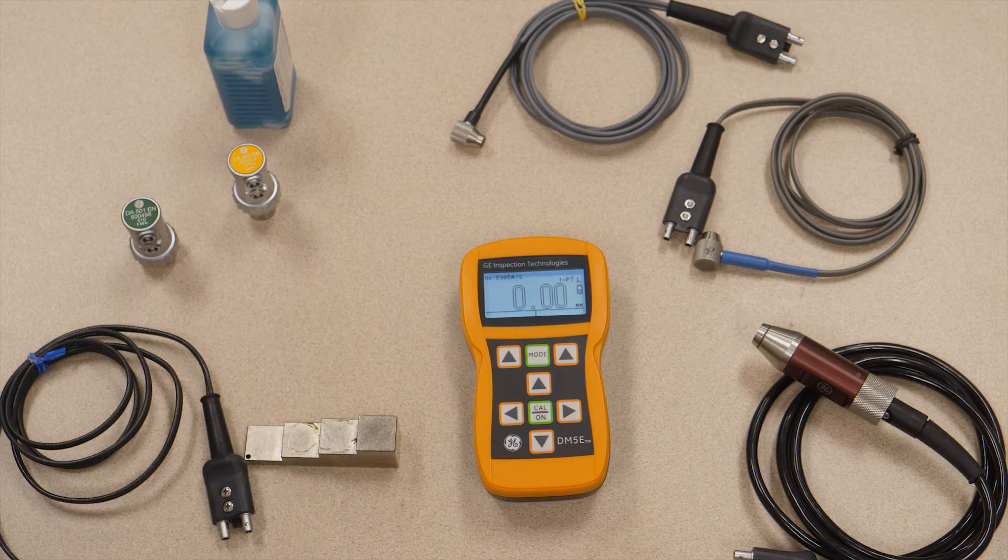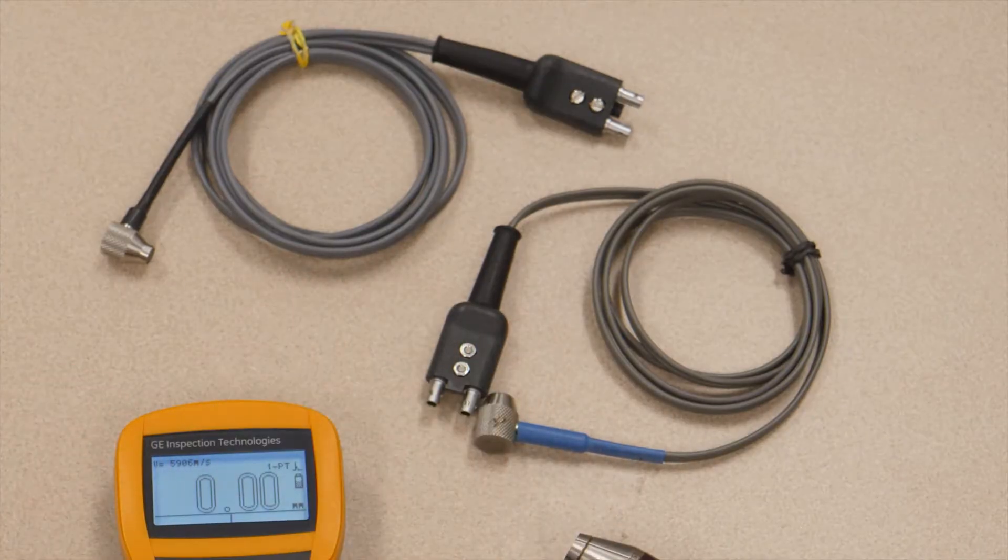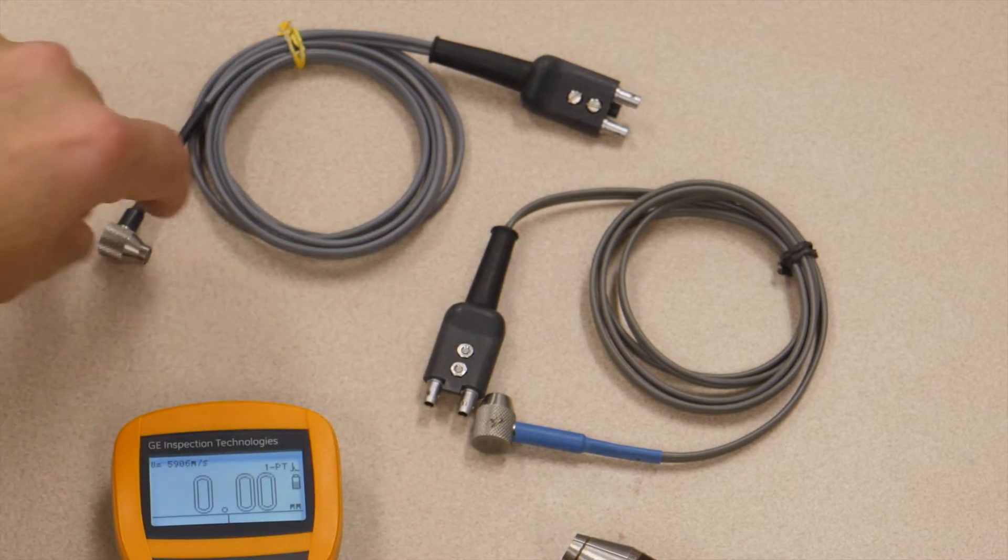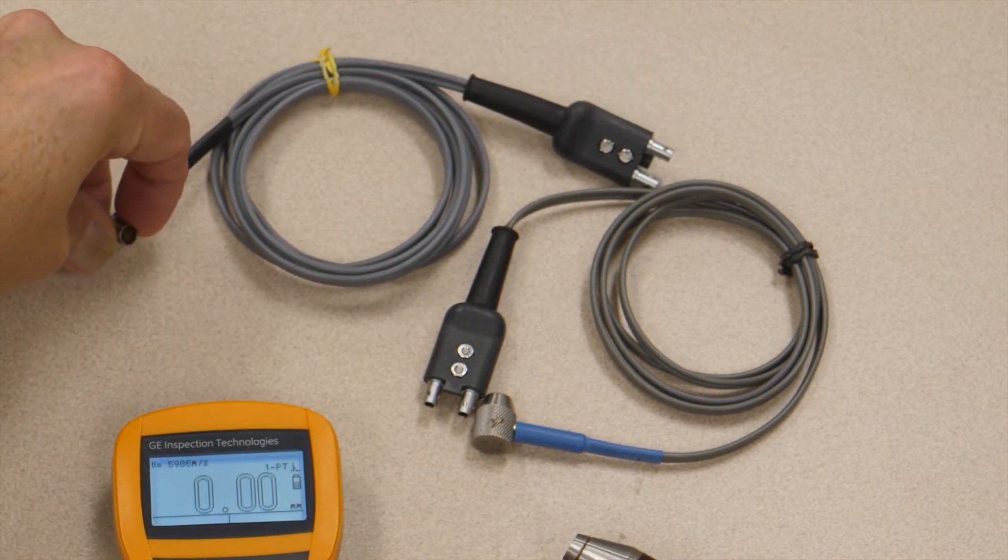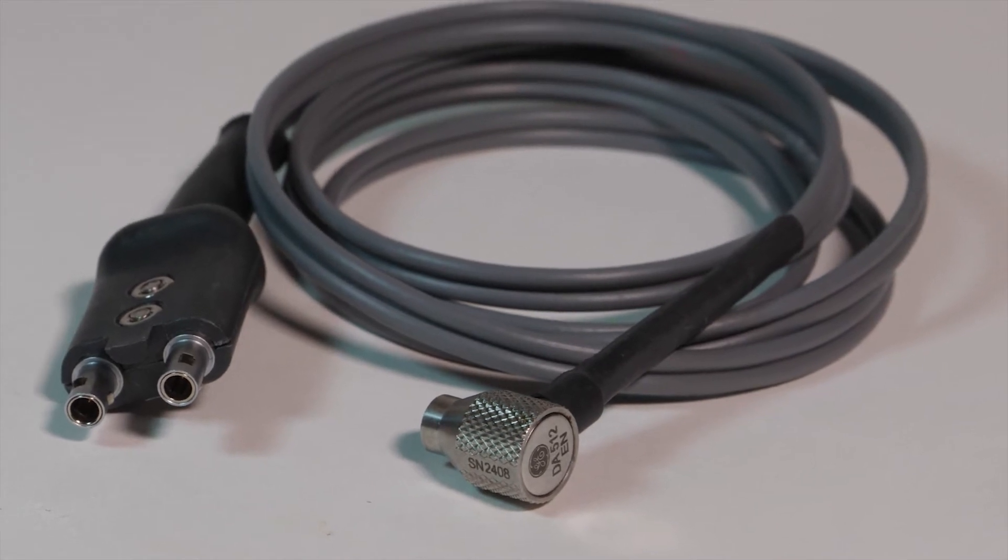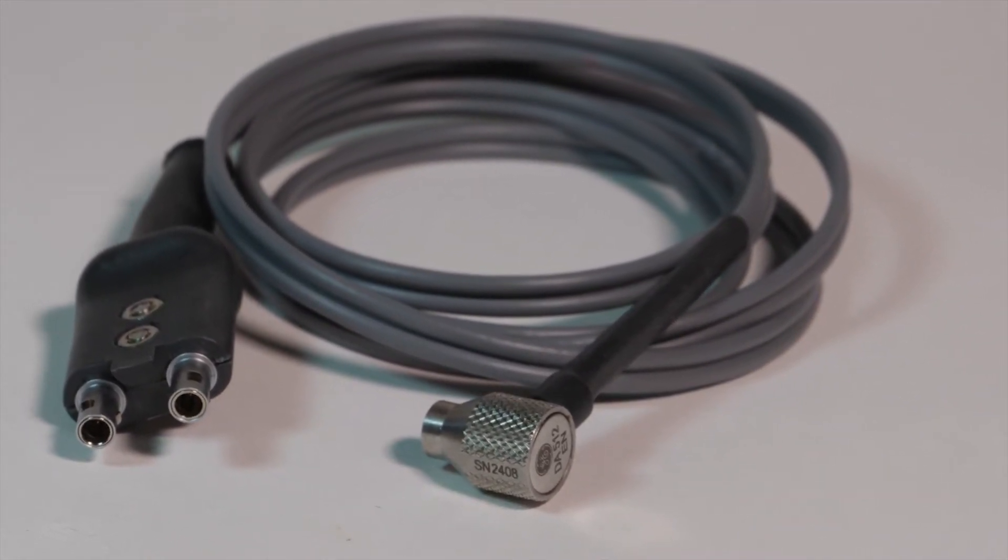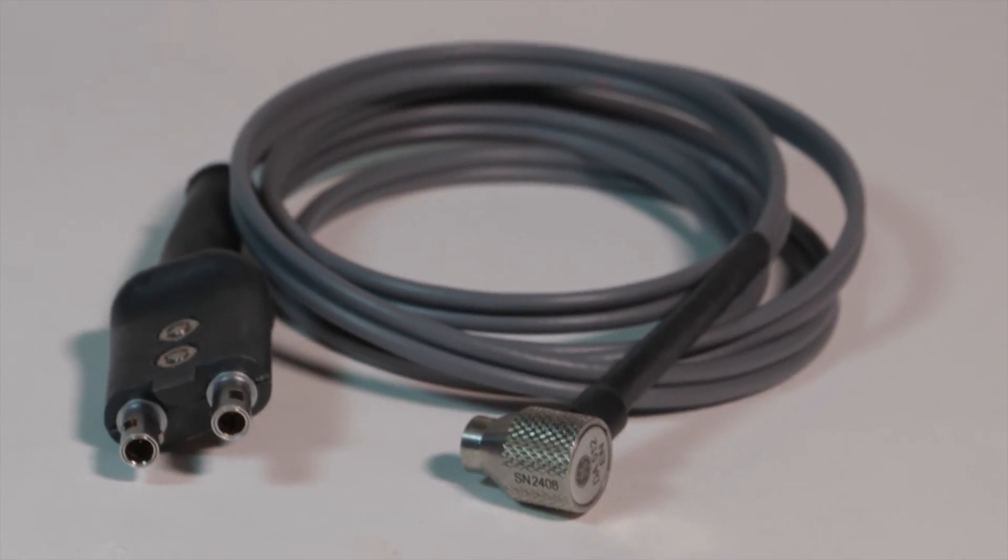So thicker materials, DA503. And we have our fingertip probes that are commonly used. The DA512 has a very small contact area, ideal for reaching into tight spaces and for reaching into pits on the surface of materials to take measurements of remaining wall thickness.